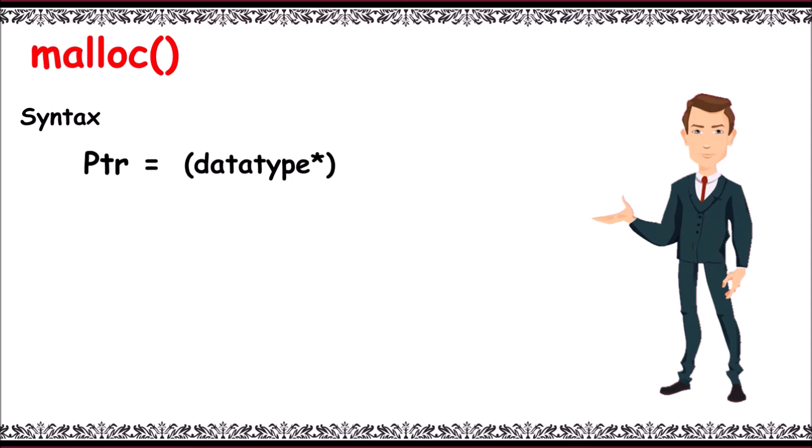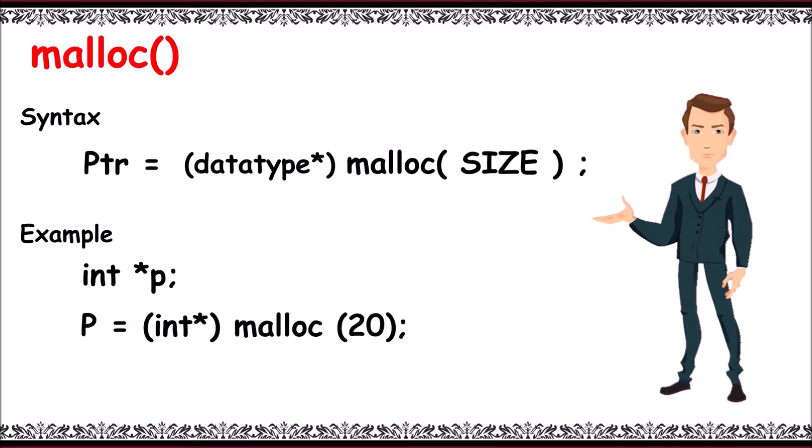In brackets we write a size in terms of bytes. For example, for this DMA we need to declare a pointer variable first, then P equals int asterisk malloc of 20.